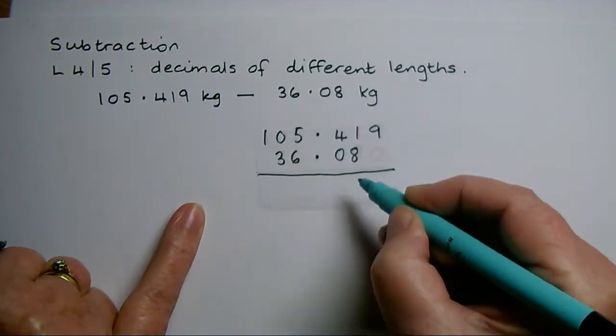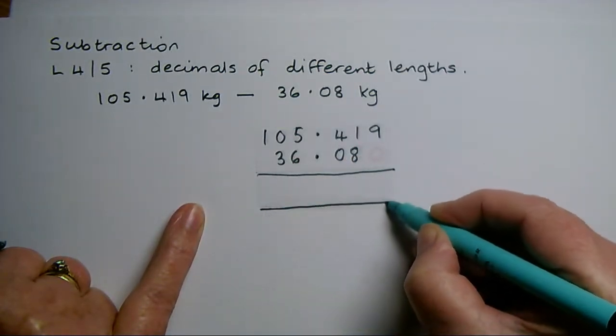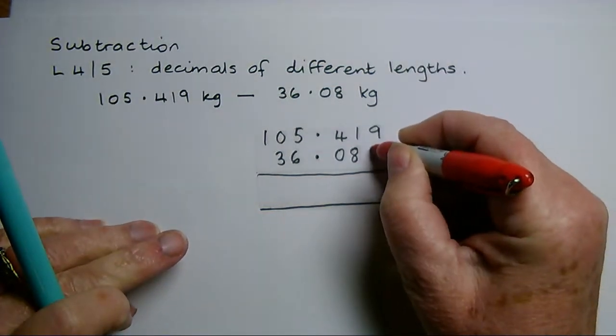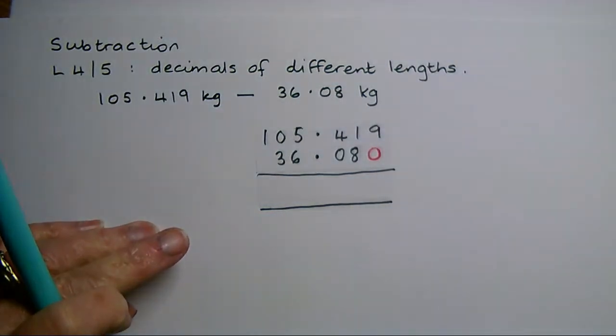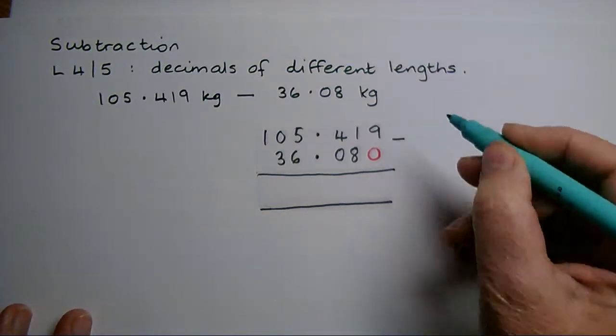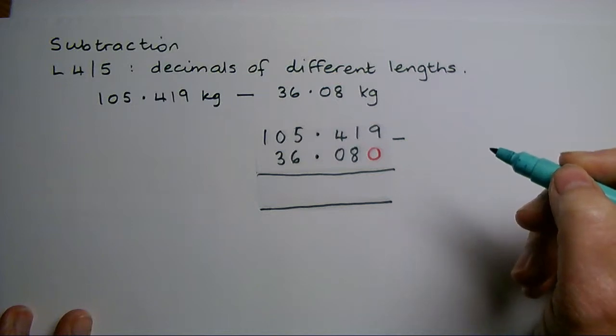Then I'm going to do the takeaway. I can see that what I need to write on the end is the zero in the thousandths column because I have no thousandths in my second number. It will make it easier to do the takeaway if I write that in.